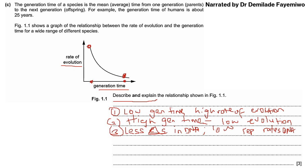We've described what we can see and explained that high generation time means fewer DNA changes and lower replication rates, so the rate of evolution decreases. For evolution to happen quickly, you need a high rate of mutations within the DNA between generations so they can respond quickly to changes. If generation time is much longer, the chances of achieving the high mutation rates required are a lot slimmer. Write three points in prose form — you don't have to number them.